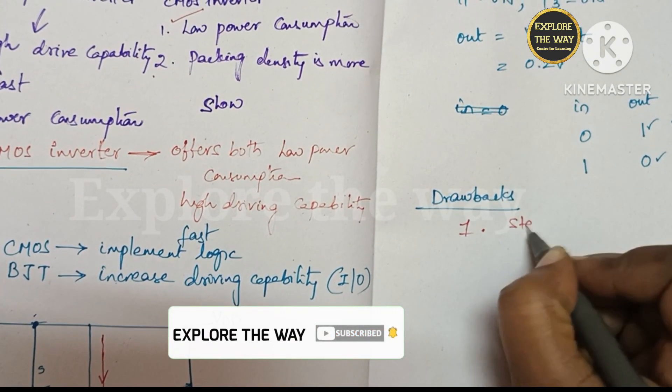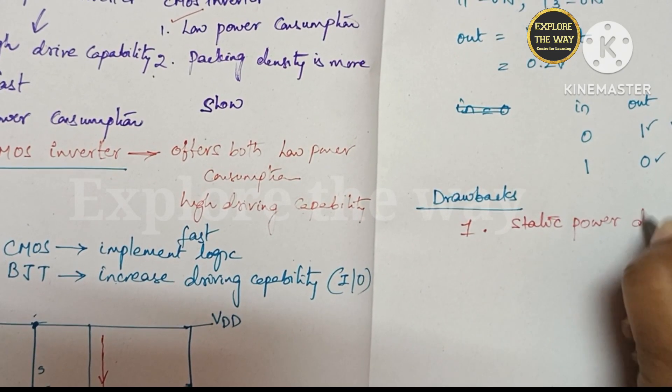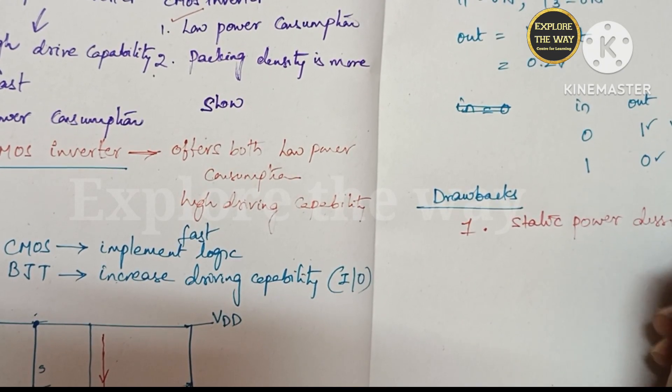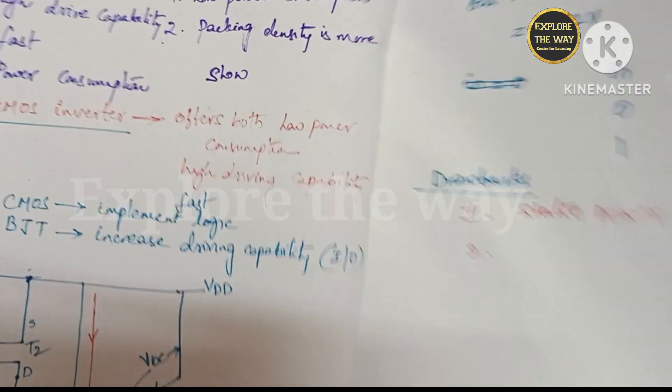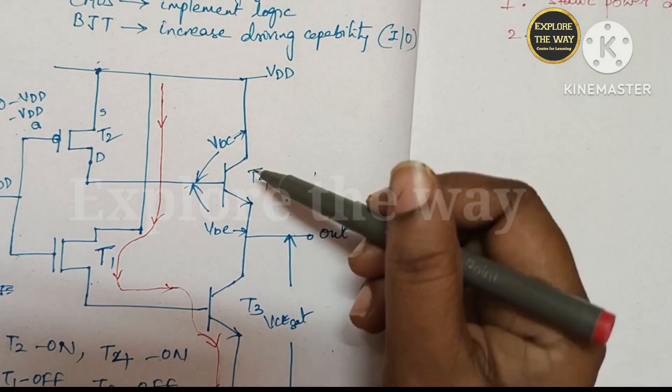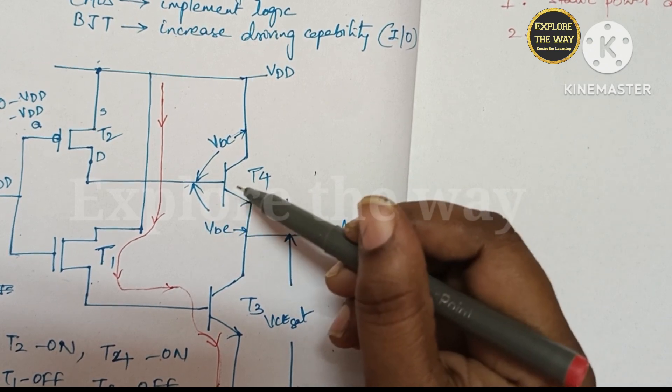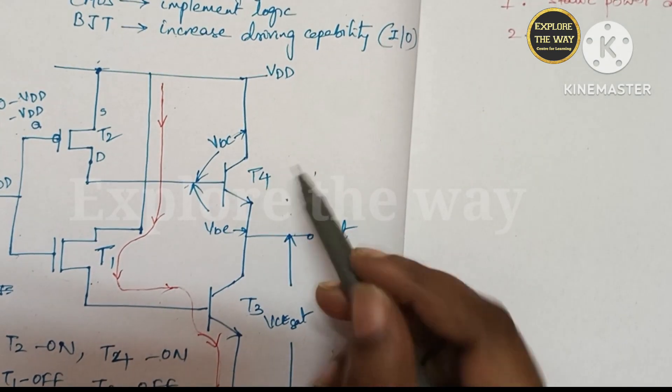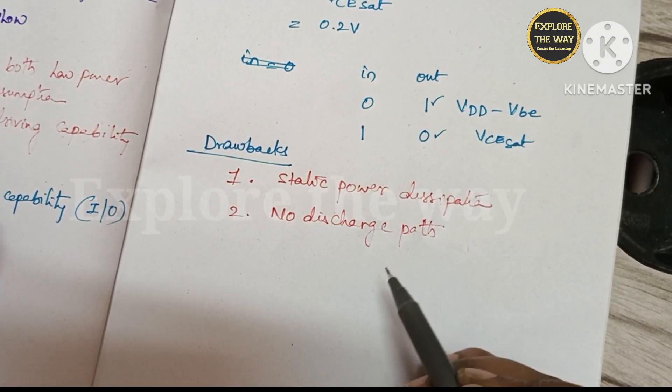So thereby, there is some static power dissipation. Second one, when the transistors T3 and T4 are turned on, there is no discharge path for these two transistors. These two are the drawbacks with this BiCMOS inverter.